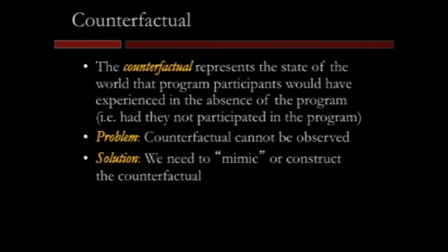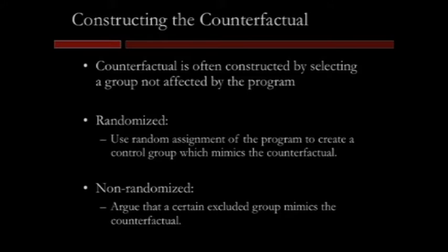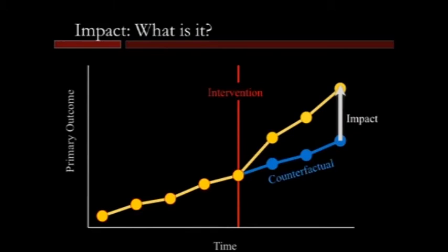We'll be talking about two specific ways. One is an example of an experimental approach, or a randomized approach. The other is a quasi-experimental or non-randomized approach. Here it's going to be a randomized evaluation — an RCT that Sharon will discuss — and a differences-in-differences approach that Mudit will discuss, coming from a natural experiment. What I'm going to try to do is set this up by focusing on a specific program and walking you through these different evaluation methodologies.